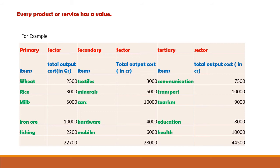In a year, after selling the wheat the final output is 2500 crores of rupees. Rice generates 3000 crores, milk 5000 crores, iron ore 10,000 crores, and fishing 2200 crores of rupees. So the final output of the primary sector comes to 22,700 crores of rupees. In simple words, the primary sector generates 22,700 crores of rupees in a year.